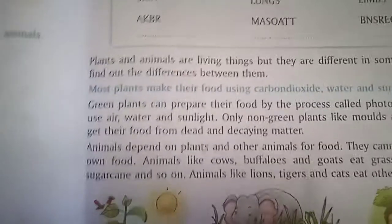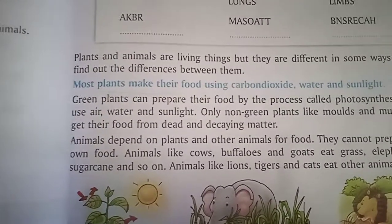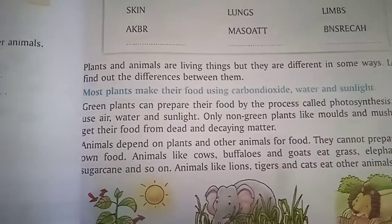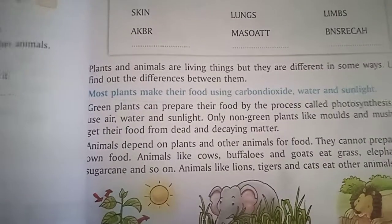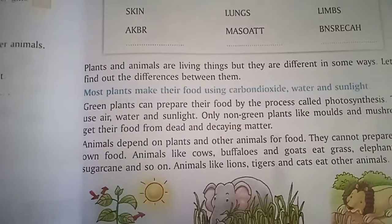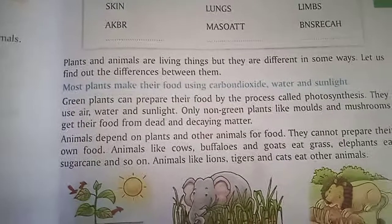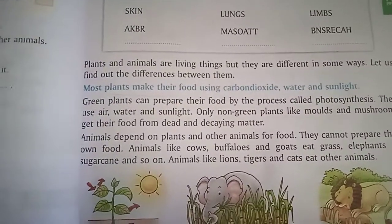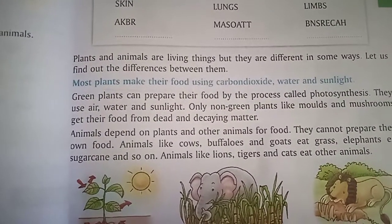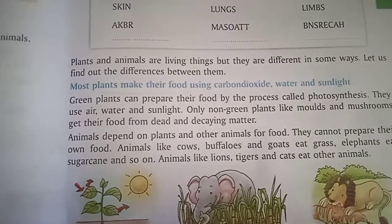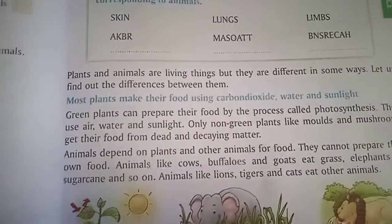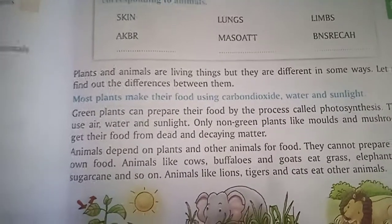Animals depend on plants and other animals for food. They cannot prepare their own food. Animals like cows and goats eat grass. Elephants eat sugarcane. Animals like lions, tigers, and cats eat other animals.